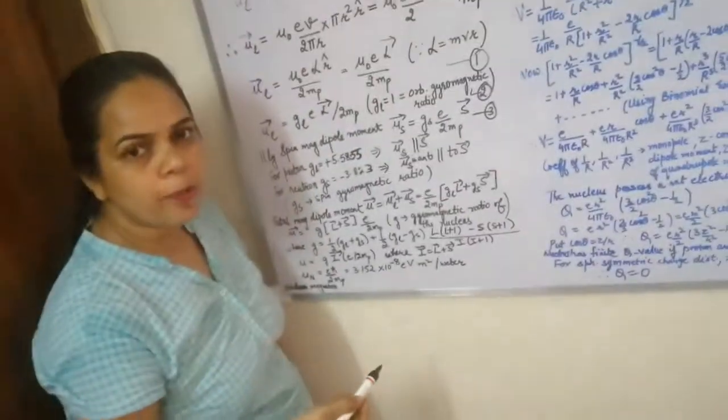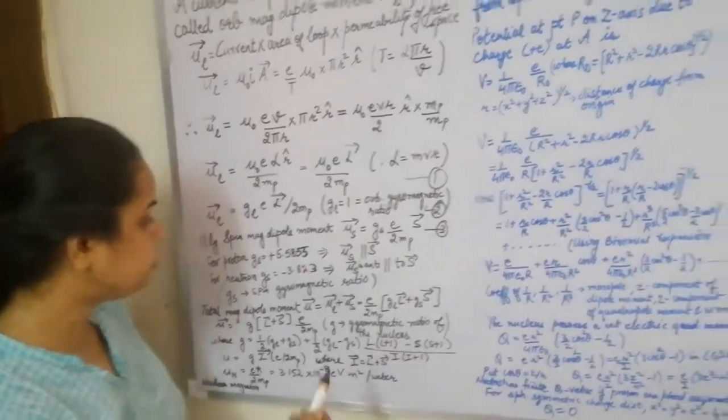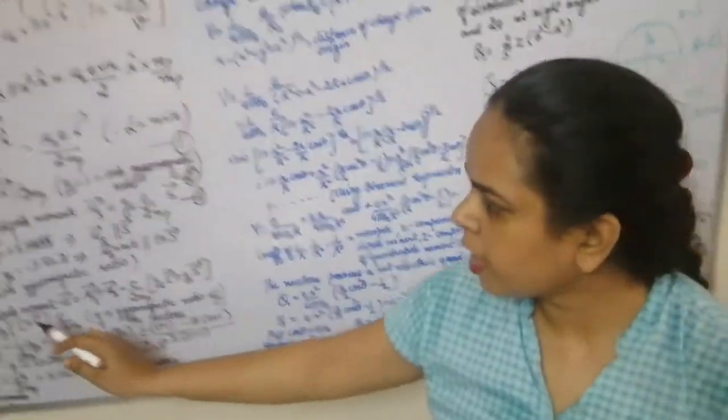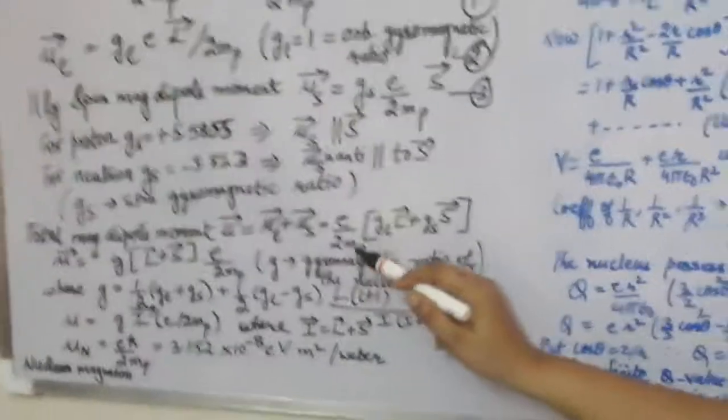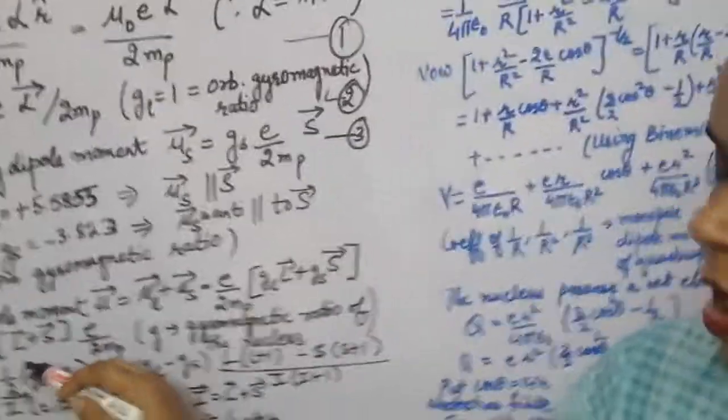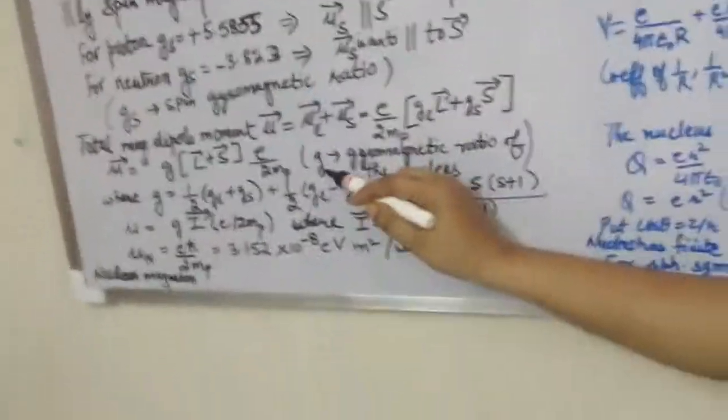Here g_s is called the spin gyromagnetic ratio. To calculate the total magnetic dipole moment, μ = μ_L + μ_s. Substituting values: μ = e/(2m_p) · (g_L · L_vec + g_s · S_vec). For simplification we write μ = g · (L + S) · e/(2m_p), where g is called the gyromagnetic ratio of the nucleus.